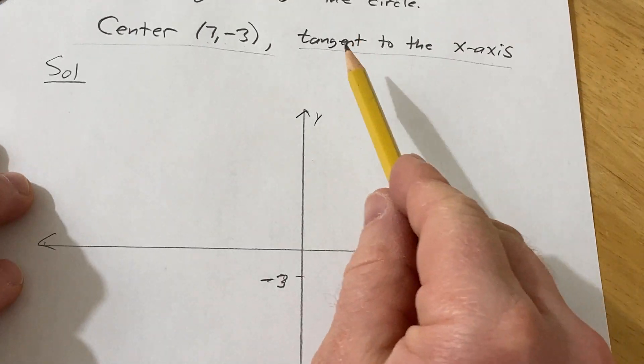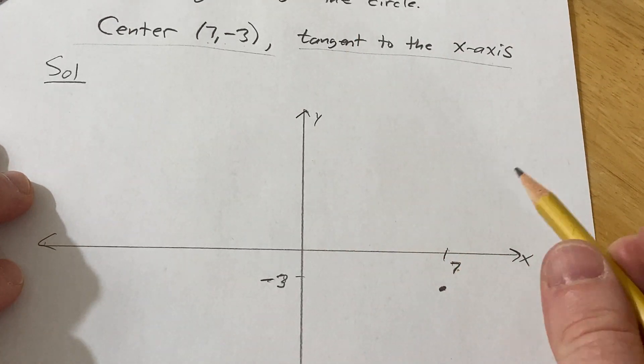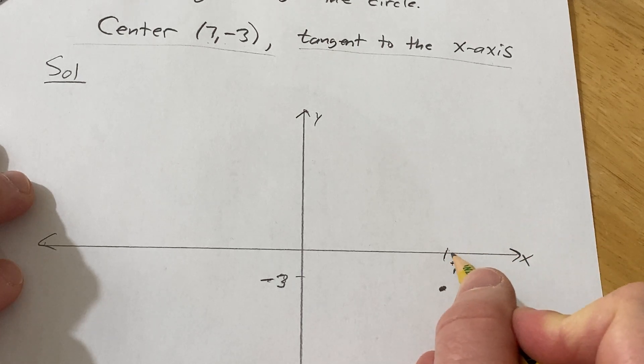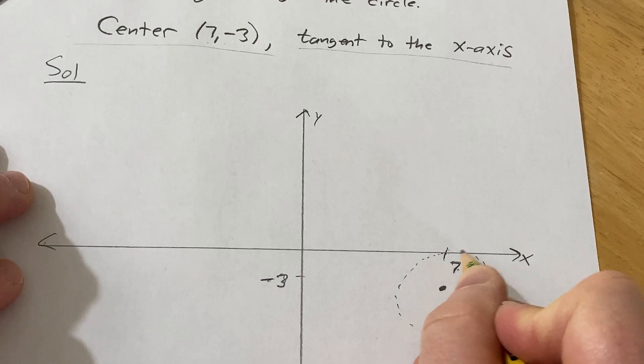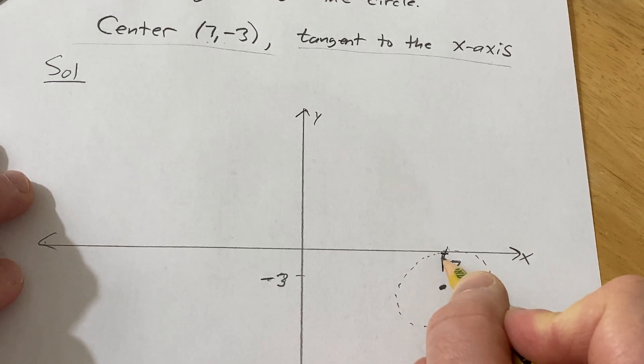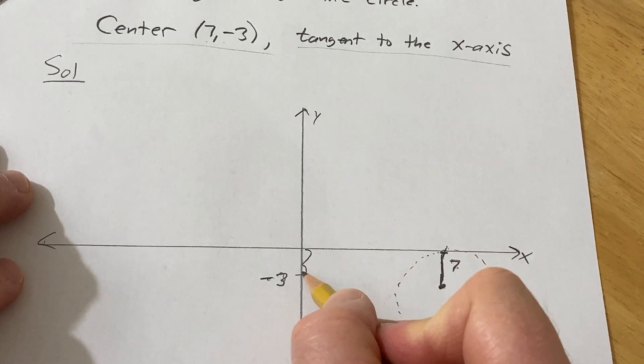And we're told it's tangent to the x-axis. Tangent means just touches. So that means it's just going to touch the x-axis right there. So this distance is the radius. It just touches it there. And this distance is 3.